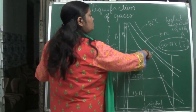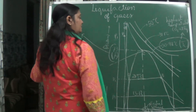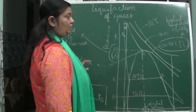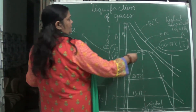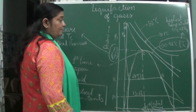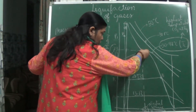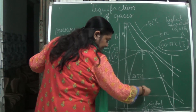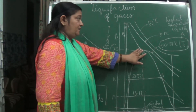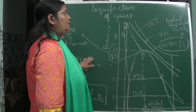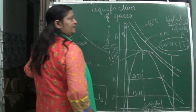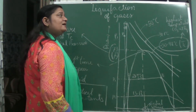When he took temperature 30.98 degrees Celsius and the pressure was 73 atmospheric pressure, for the first time he could see that yes, carbon dioxide is liquefying. He noted that the temperature where it first liquefied is the highest temperature at which CO2 gets liquefied, and it is known as critical temperature.